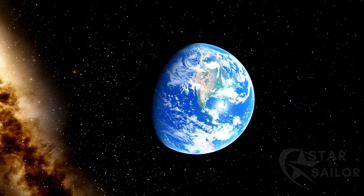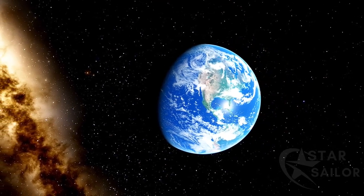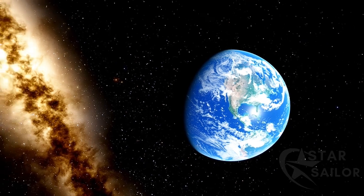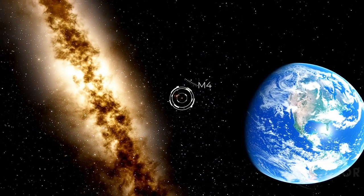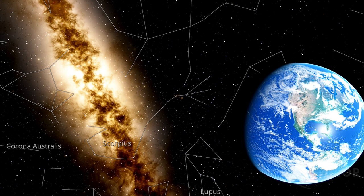Methuselah is the oldest known planet, almost as old as the universe itself. Methuselah is located in the center of the globular cluster Messier 4, in the direction of the constellation Scorpius.